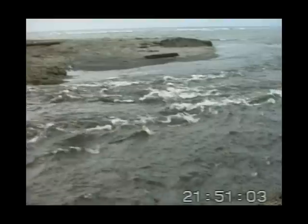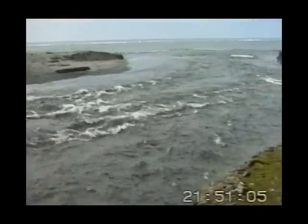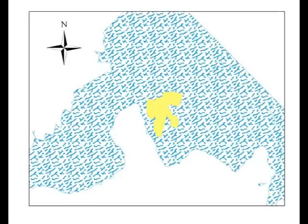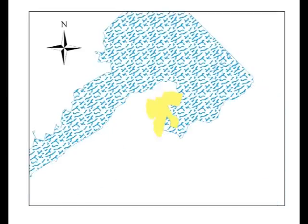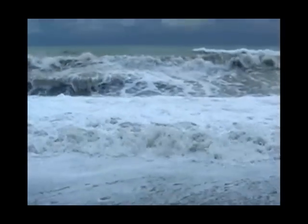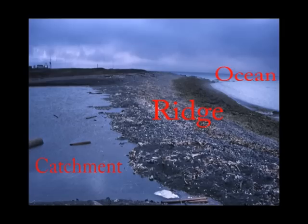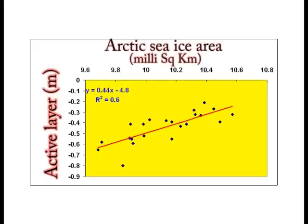What you saw was a theory. Now we want to prove the theory. That is, reduction of sea ice and storms are two causes of making storm ridges. Also, the reduction of sea ice increases the thickness of the active layer.